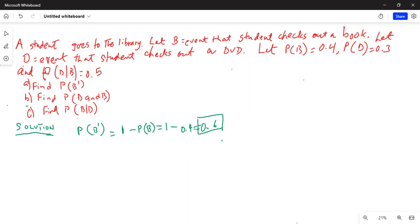1 minus probability of B, 1 minus 0.4, equals 0.6. So this is part A. Now we would do part B.